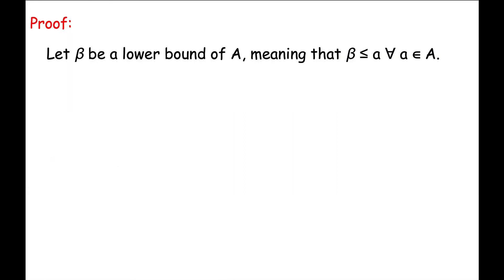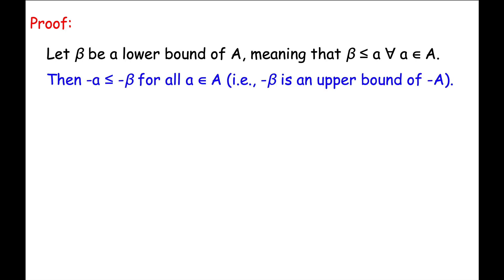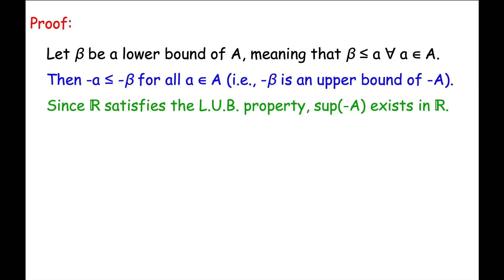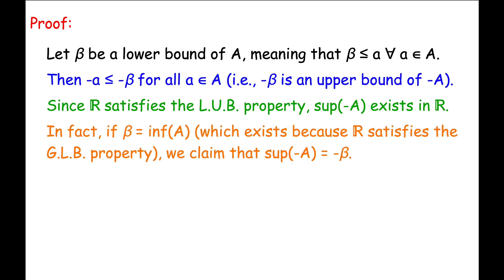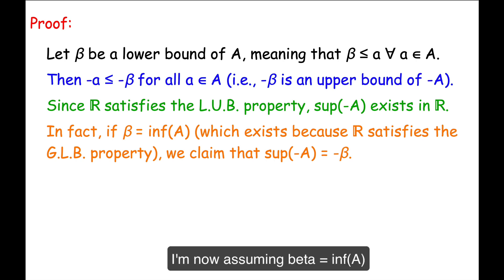Now let's work through the proof of this exercise. Remember, capital A is assumed to be bounded below. Let beta be a lower bound of capital A, so that beta is less than or equal to every element of capital A. Multiplying both sides of this inequality by negative 1 implies that negative a is less than or equal to negative beta for all little a in capital A. In other words, negative beta — the additive inverse of beta — is an upper bound of the set negative capital A. Since the set of real numbers satisfies the least upper bound property, we know that the sup of negative A exists in R. In fact, if beta equals the inf of A, which exists because R also satisfies the greatest lower bound property, we claim that the sup of negative A equals negative beta, the additive inverse of beta.